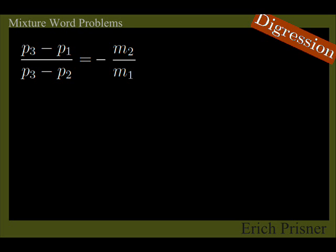The ratio of the distances between P1 and P3, which is absolute value of P3 minus P1, and between P2 and P3, which is absolute value of P3 minus P2, equals the ratio M2 over M1 of the masses.